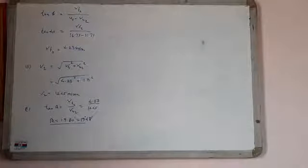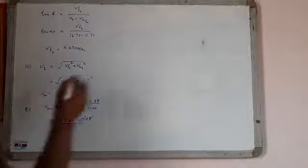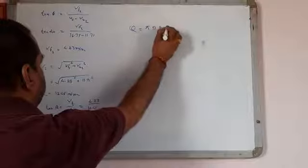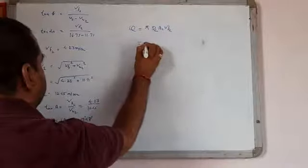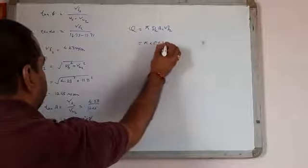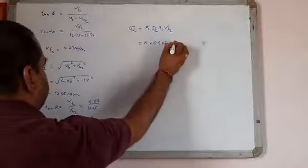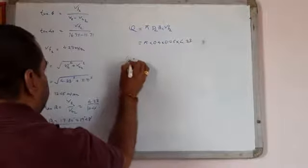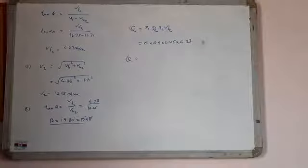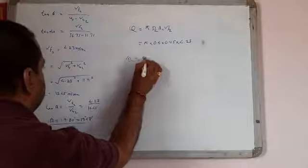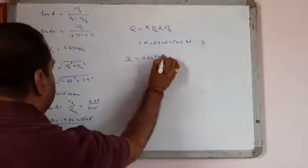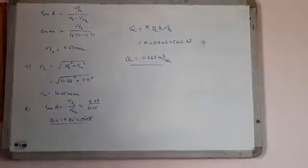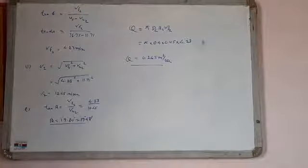This is the value of beta. Now discharge, we have to find out discharge. Q equal to pi D2 B2 Vf2. Putting the values here, pi into D2 is 0.4, B2 is 0.05 and Vf2 is 4.23. So the value of Q comes here 0.265 meter per second discharge. We have to find out.